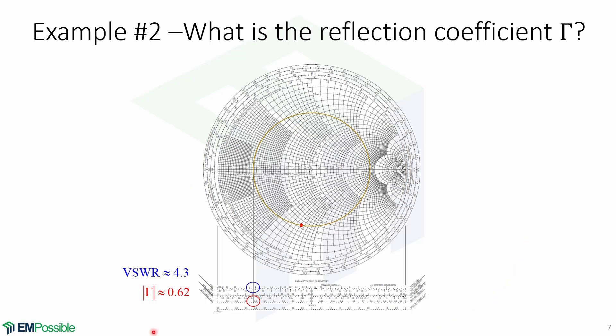Now, using the same example, the reflection coefficient can be found in the horizontal bars located here. We can also locate the VSWR at the left side of the circle by looking at the top horizontal bar.